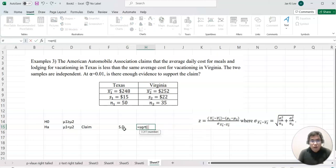Let's find out the standard deviation value. This becomes square root, then we want to do s1 squared, which is 15 squared, divided by 50, close the parentheses, plus open the parentheses one more time, and 22 squared divided by 35, close twice. This is our standard deviation value.